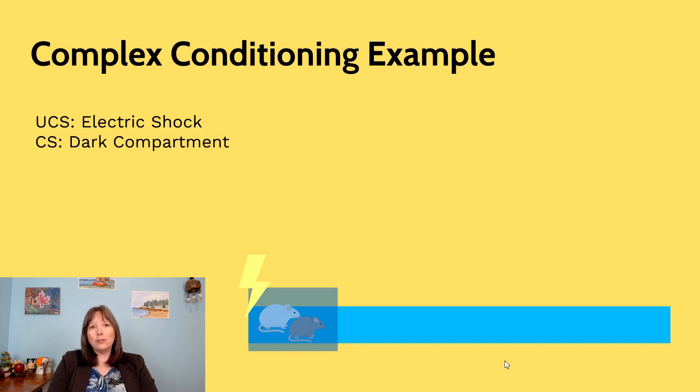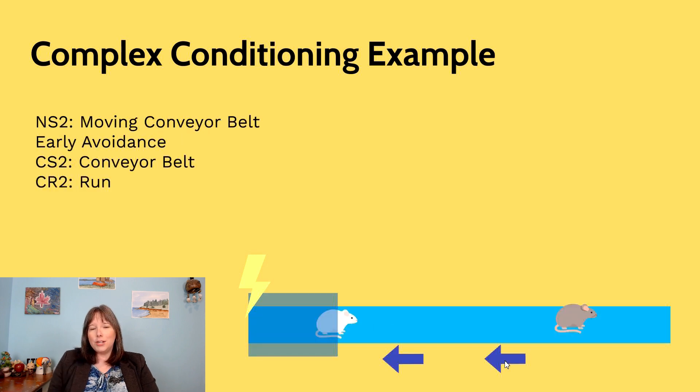The rats are now going to want to avoid the dark compartment. In addition to making the dark compartment conditioned stimulus one, neutral stimulus two is the moving conveyor belt. When they turn on the conveyor belt, the conveyor belt is now pushing the rats towards the dark compartment.